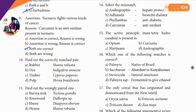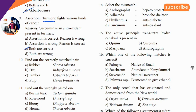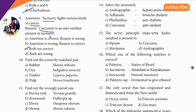Ninth question, assessment and reason: turmeric fights various kinds of cancer. So turmeric is a cancer fighter or cure. Curcumin is an antioxidant. So turmeric — curcumin is an antioxidant. So both are correct.